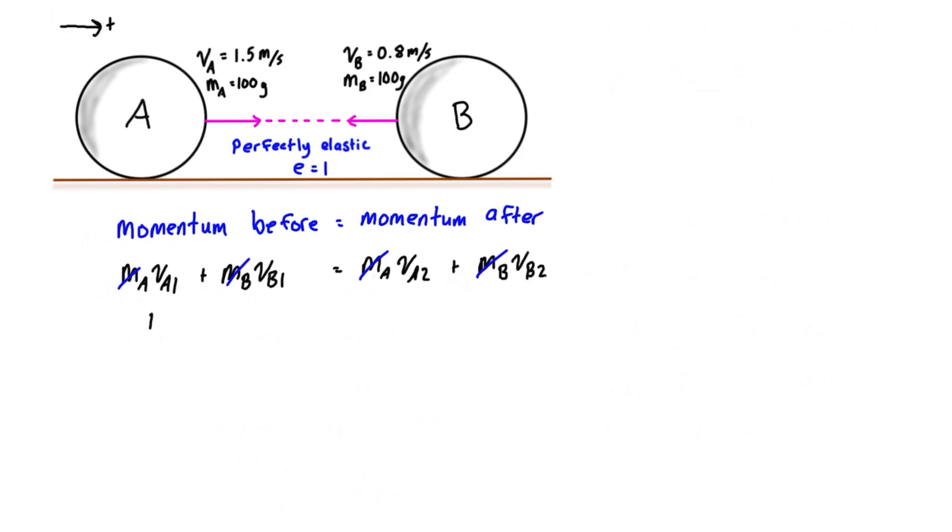So we have 1.5 meters per second minus 0.8 meters per second for B is equal to VA2 plus VB2. We can just simplify the left hand side. So we have 0.7 meters per second is equal to VA2 plus VB2.